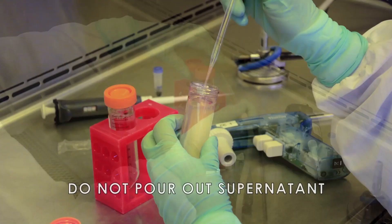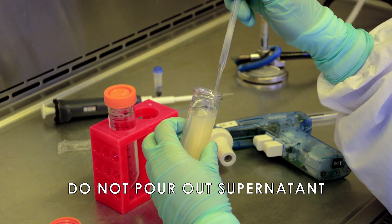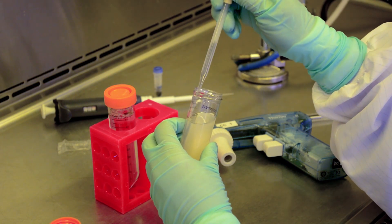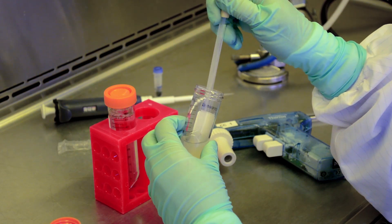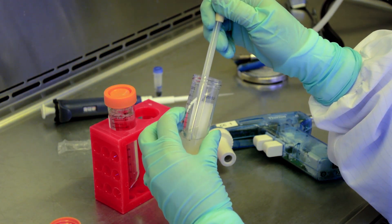Carefully aspirate and discard the supernatant fluid without disturbing the cell pellet. Position the tip of the pipette at the top of the liquid and remove any dead cell debris from the suspension as you aspirate the liquid.